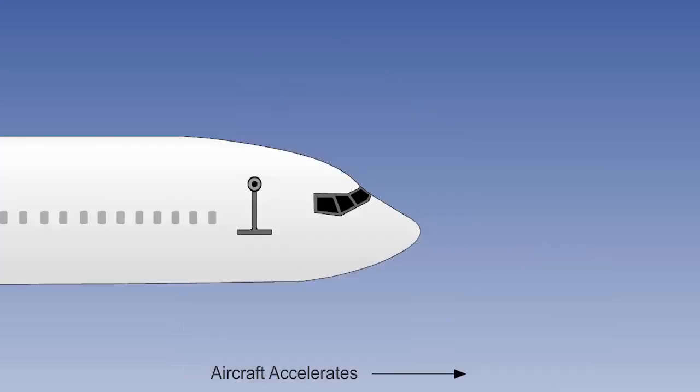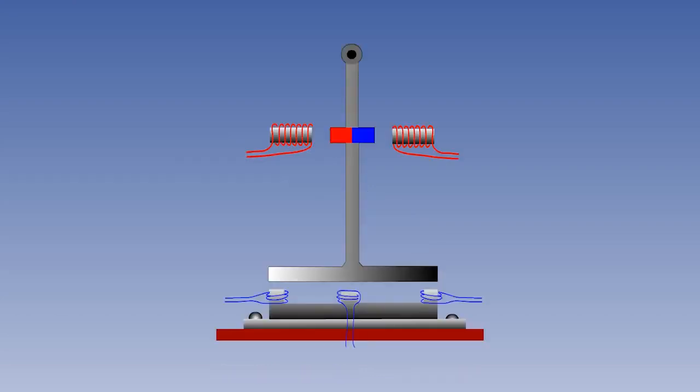We'll start by looking at accelerometers in a bit more detail. There are various different forms of accelerometer, but a popular early model was the pendulous E and I bar type. The E and I bar is a fairly common form of transducer and is also found, for instance, in the servo-assisted altimeter.